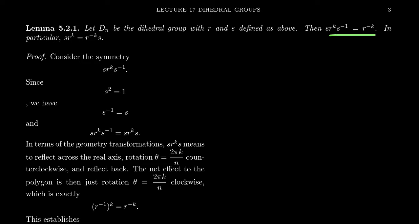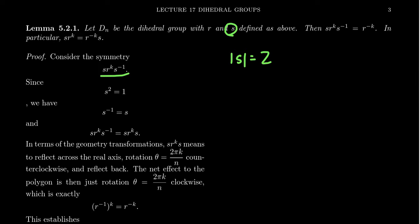So let's prove the identity S R^k S⁻¹ = R^(−k). Starting with the left-hand side: recall that reflection across any line is an order-two symmetry, so S² = 1. This means S⁻¹ = S. Therefore S R^k S⁻¹ can be rewritten as S R^k S — we're looking at the map where we reflect, rotate, then reflect back.